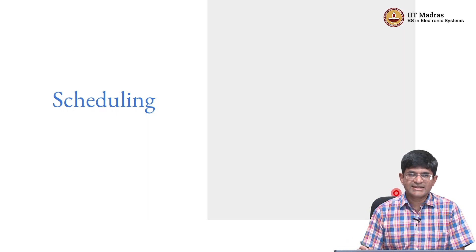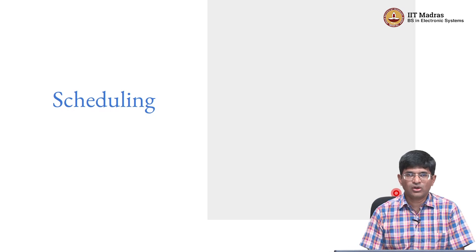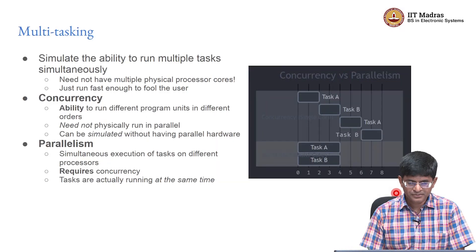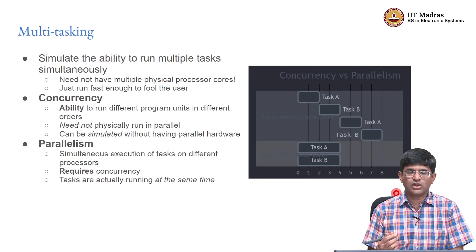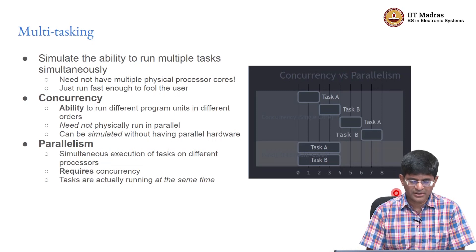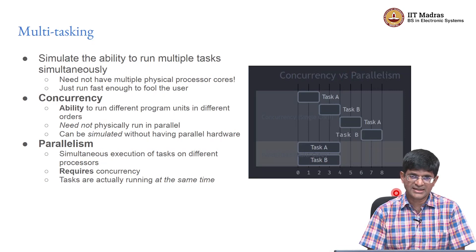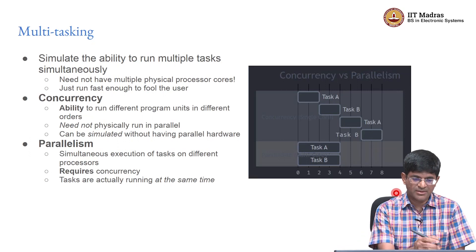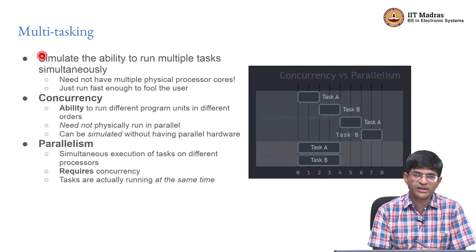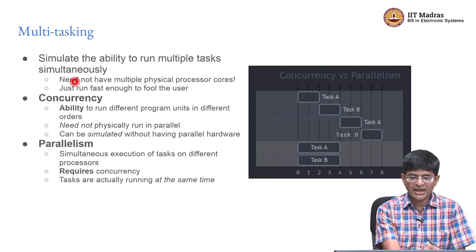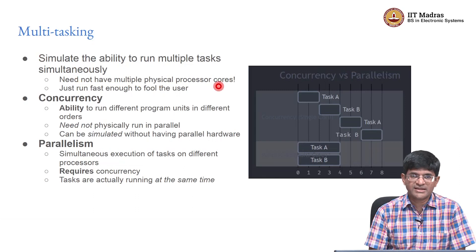Now that we have seen how tasks can be created, let us look in a little more detail at how tasks get scheduled for execution. The first thing is we want to understand the concept of multitasking a little better. Multitasking is basically the ability to simulate the fact that multiple tasks can run simultaneously. I am emphasizing the word 'simulate' because in reality I may not have multiple physical processor cores at all — I could entirely be running on a single processor core.